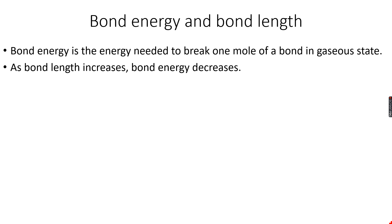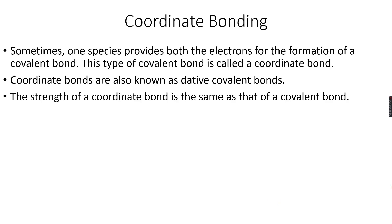The next topic is coordinate bonding. Covalent bonding is a sharing of electrons, but sometimes both the electrons needed for a covalent bond are given by one atom. Usually each atom contributes one electron, but sometimes one atom shares both its electrons with another that has none — this is called a dative covalent bond, or coordinate bond.